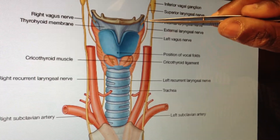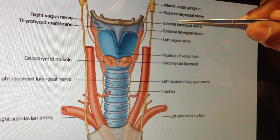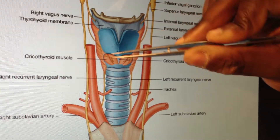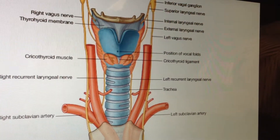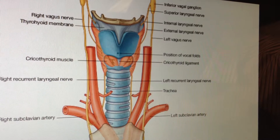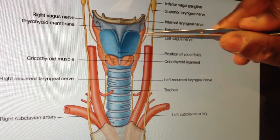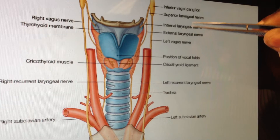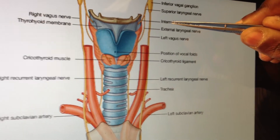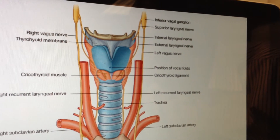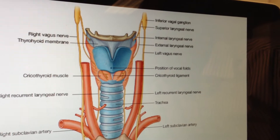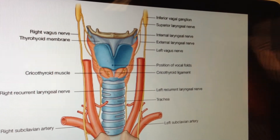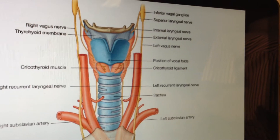The internal laryngeal nerve, going inside through the hole, is going to supply sensation to everything above the glottis - the supraglottic area. Now let's talk about the vagus for a little bit. The vagus gets its name because it's the wandering nerve.